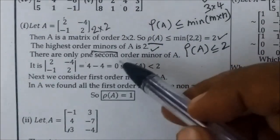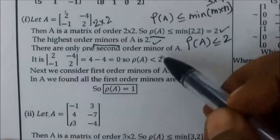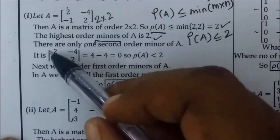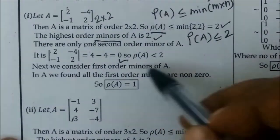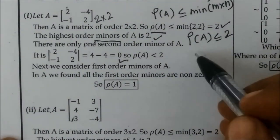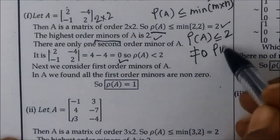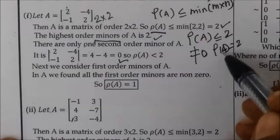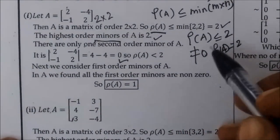There is only one second-order minor. This is the highest order minor of A, and 2 is the highest order. Now we find the determinant. If the determinant is equal to 0, then rho of A is less than 2. But if it is not equal to 0, then rho of A is equal to 2.